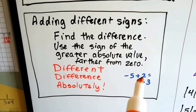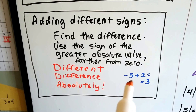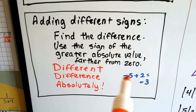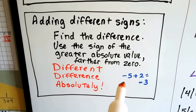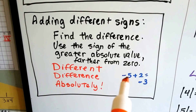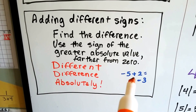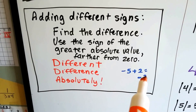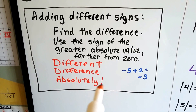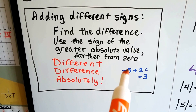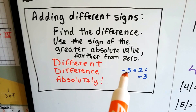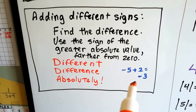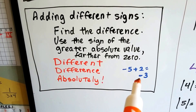Let's say we have negative 5 plus 2 — that 2 is a positive 2, so that's a negative and a positive. We find the difference between their absolute values. The absolute value of negative 5 is 5, and the absolute value of positive 2 is 2. The difference between 5 and 2 is 3. The sign of the greater absolute value belongs to negative 5, so we take that negative sign. Negative 5 plus 2 equals negative 3.